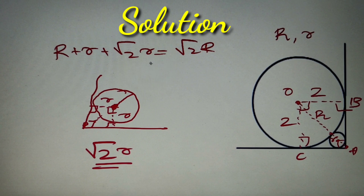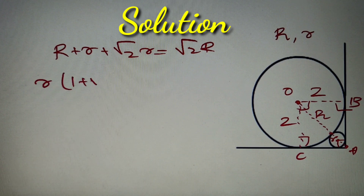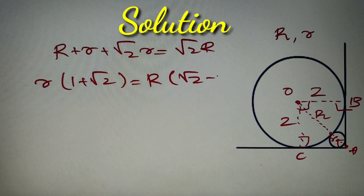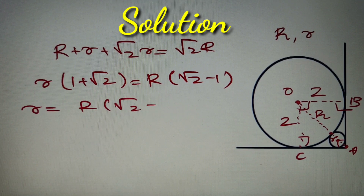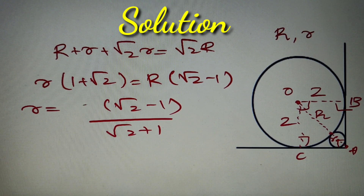Using this relation, we can find the value of small r. Taking all terms with small r to the left-hand side and terms with capital R to the right-hand side, we get: small r times (1 plus root 2) equals capital R times (root 2 minus 1). So small r equals R times (root 2 minus 1) divided by (root 2 plus 1). Since capital R equals 2, we get: 2 times (root 2 minus 1) divided by (root 2 plus 1).